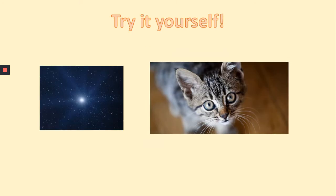Now you can try it yourself. Take a look at these two pictures and write a simile for each. The first is a picture of stars in space and the second is a cat. Look at the cat — how it looks, its eyes — and write a simile. Remember, we have to use the words 'like' or 'as.' Pause this section and do this now. Well done — you can take a picture of your similes and send it over to me.